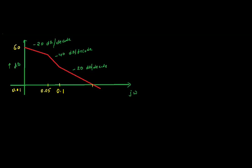Let's see how a general transfer function looks, so you'll know how to write a transfer function from a Bode plot. The general form is K divided by S times (1 + S·tau1) times (1 + S·tau2) in the denominator, and (1 + S·tau3) in the numerator. This is the general transfer function form.